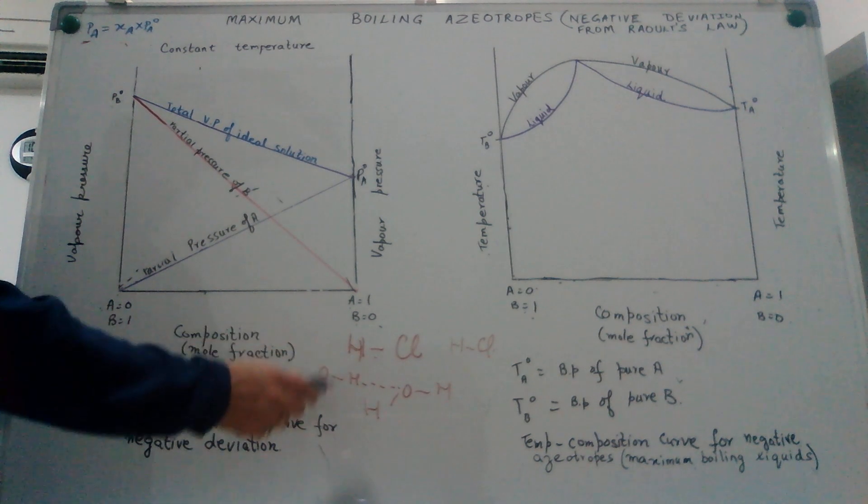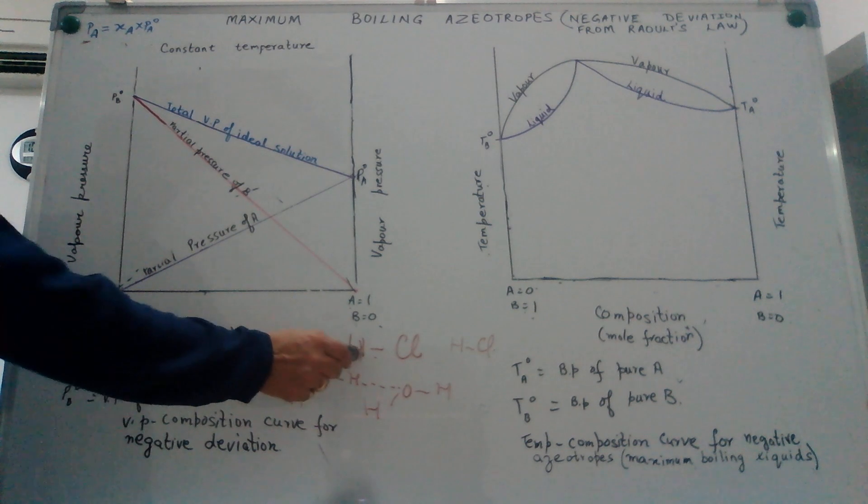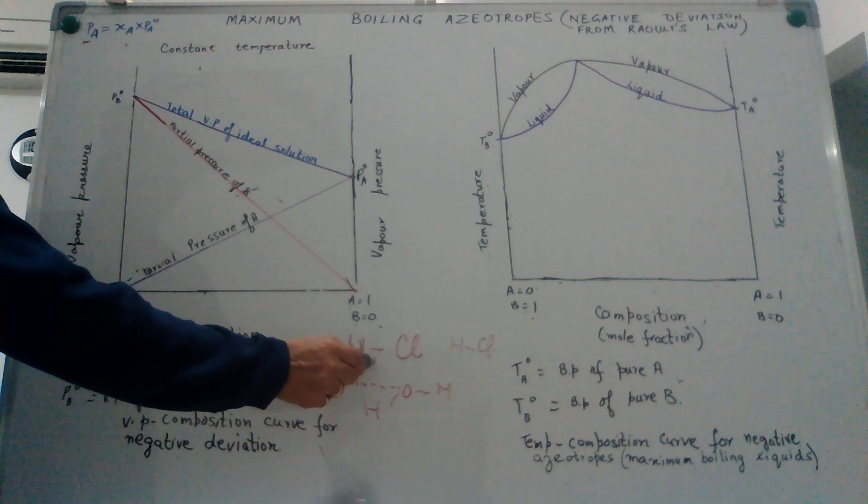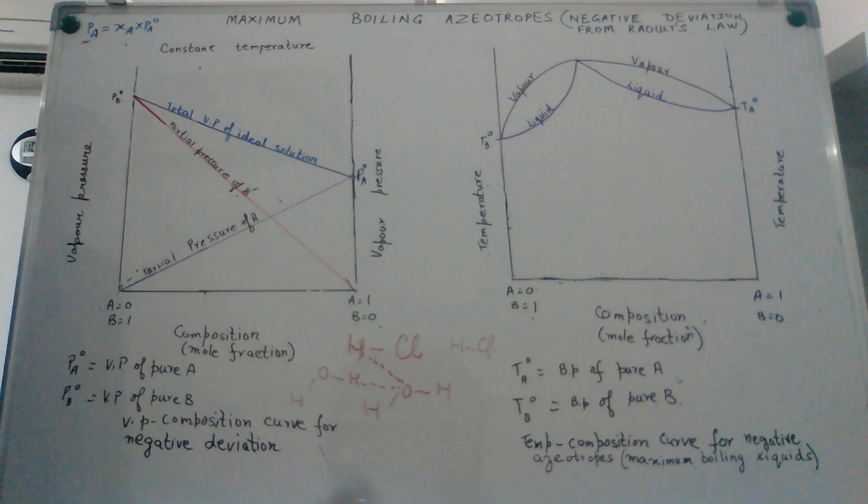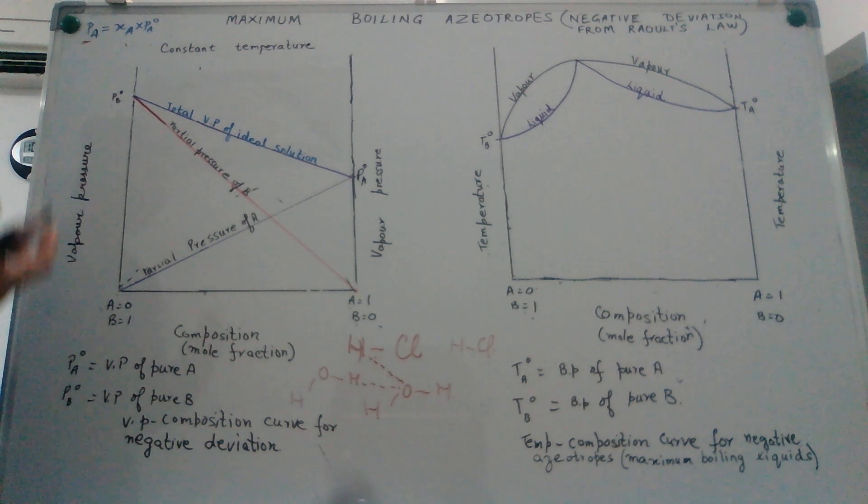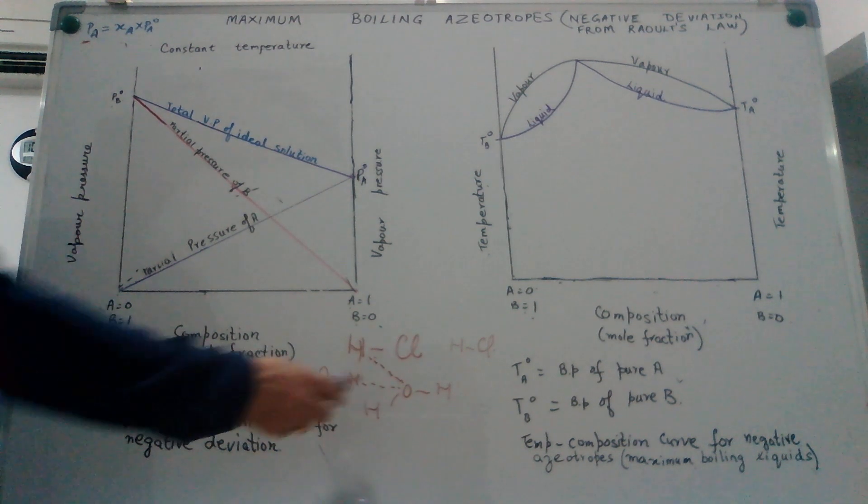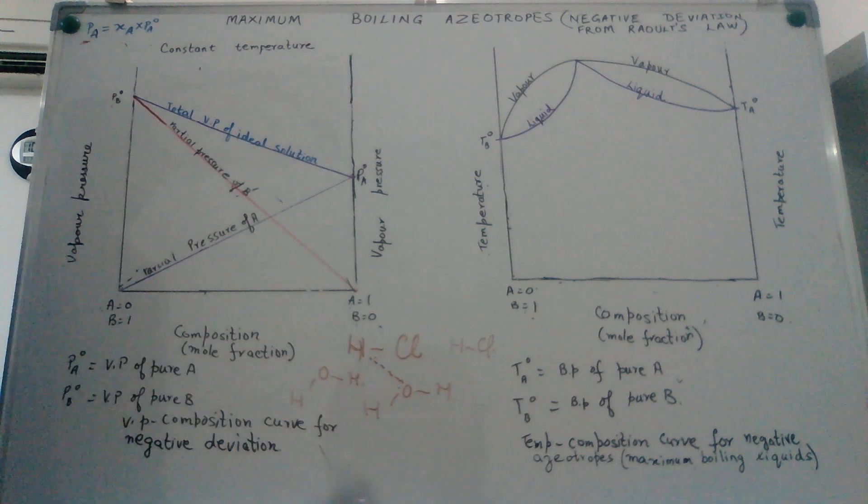Now the extent of attraction between two HCl molecules is not so much as between two water molecules. We mix the two HCl and water. Now HCl molecule develops strong hydrogen bonding with the water molecule. In other words now the distance between any two molecules actually decreases because HCl molecules come closer to each other because of hydrogen bonding with the water molecule.